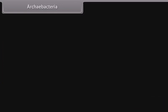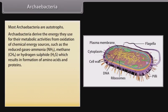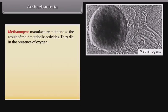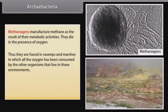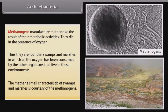Archaebacteria: Most Archaebacteria are autotrophs. They derive energy for their metabolic activities from oxidation of chemical energy sources such as reduced gaseous ammonia (NH₃), methane (CH₄), or hydrogen sulfide (H₂S), which results in formation of amino acids and proteins. Archaebacteria are divided into three groups: Methanogens, Thermoacidophiles, and Halophiles. Methanogens manufacture methane as a result of their metabolic activities. They die in the presence of oxygen, so they are found in swamps and marshes where oxygen has been consumed by other organisms — the methane smell characteristic of swamps is courtesy of the methanogens.